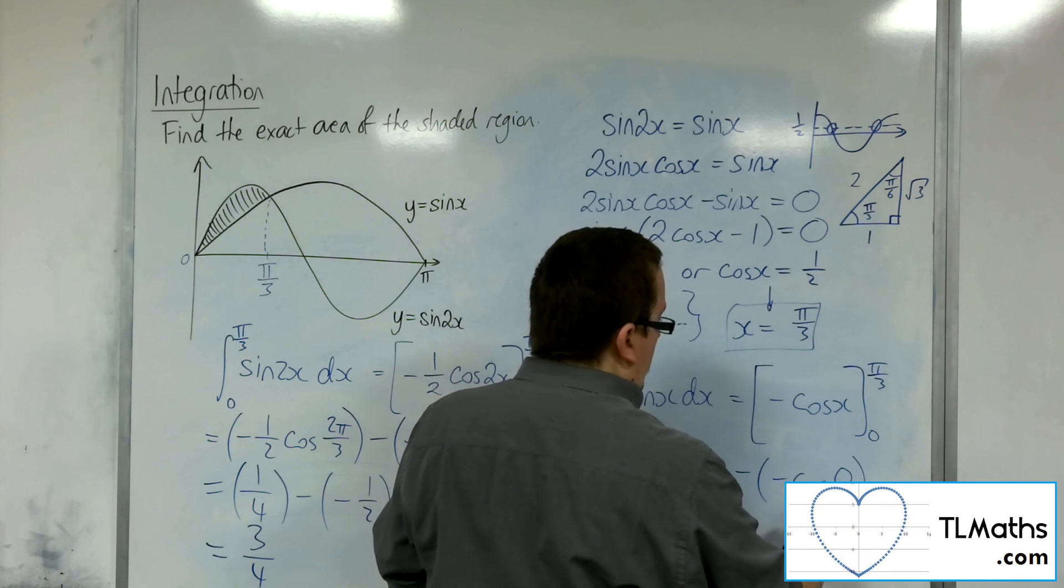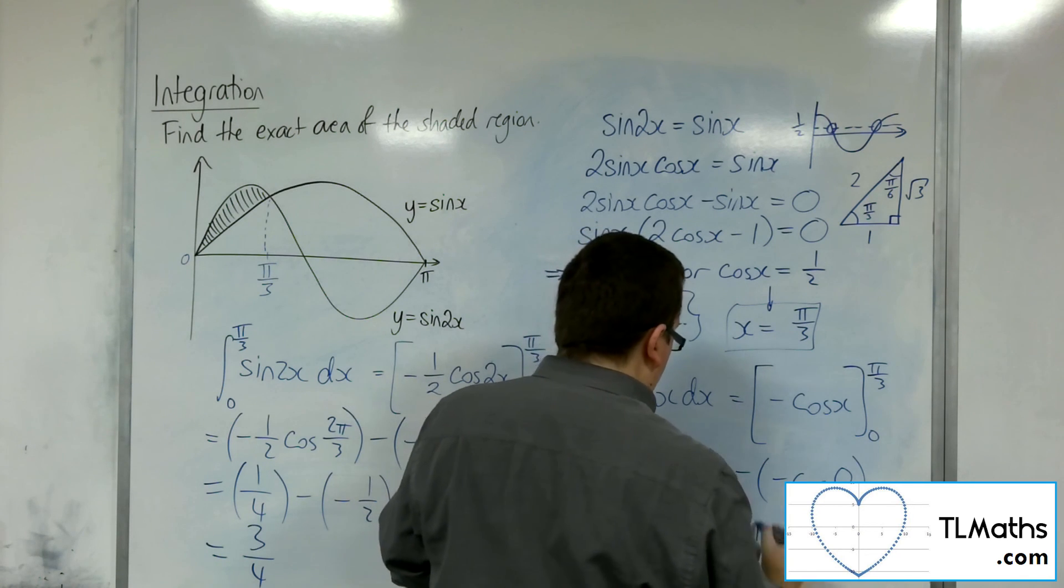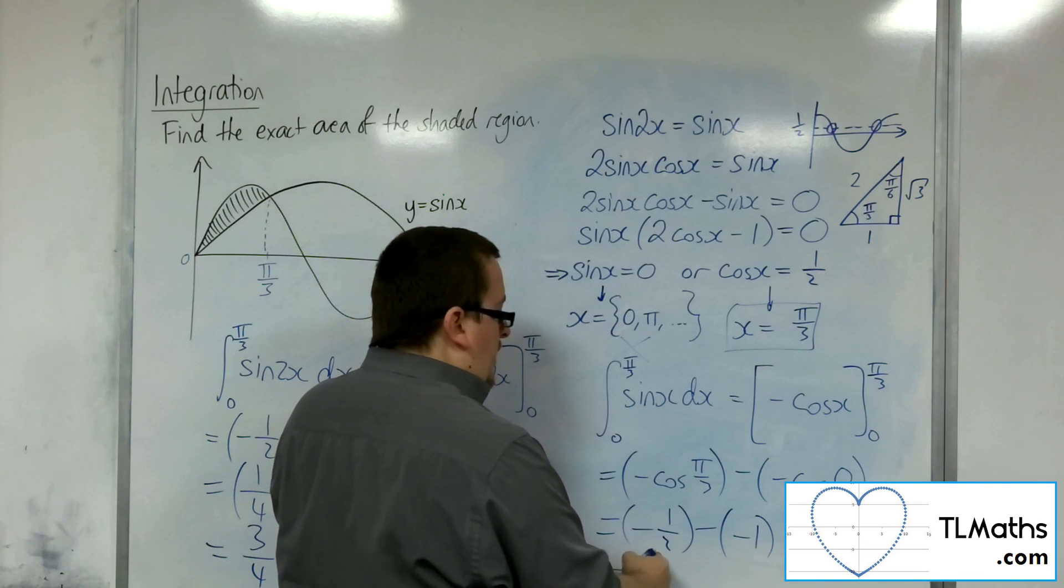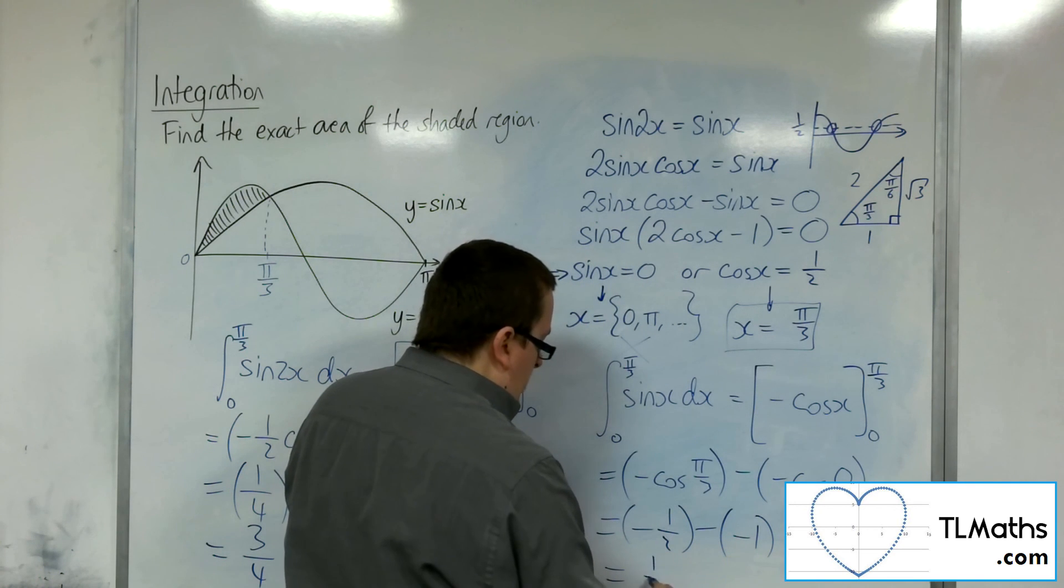Take away, well, minus cosine of 0 is minus 1. So we've actually got minus 1 half plus 1, which is just 1 half.